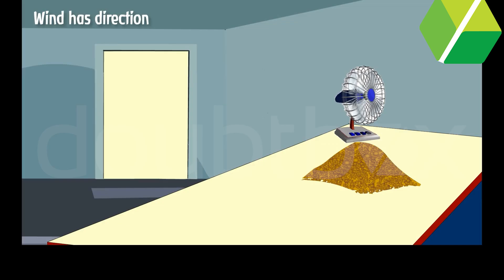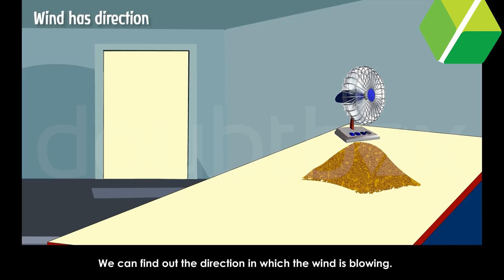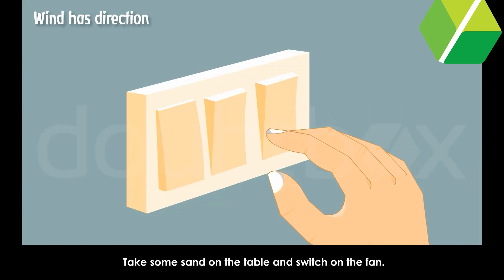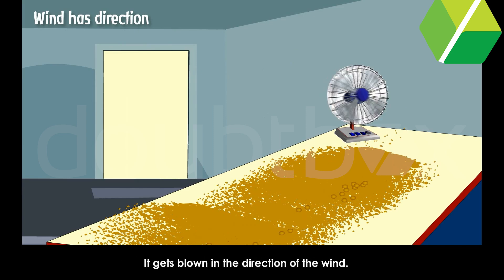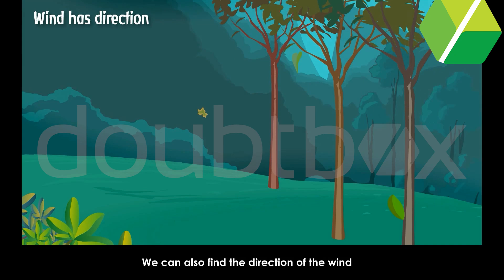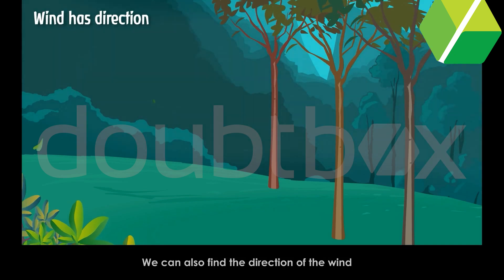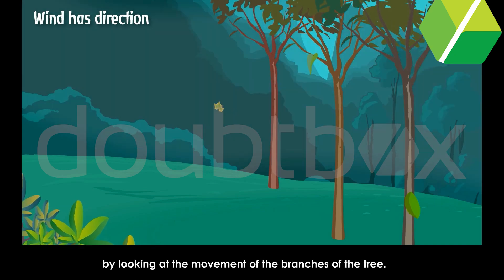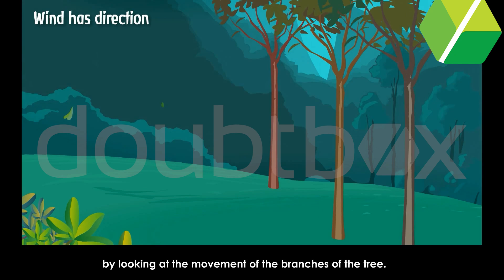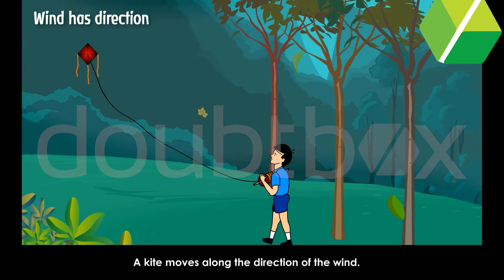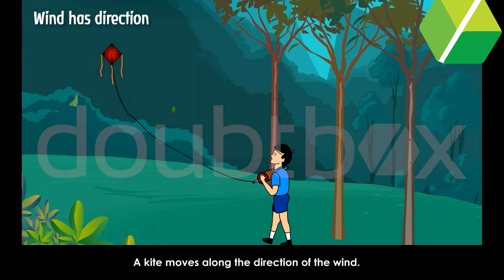Wind has direction. We can find out the direction in which the wind is blowing. Take some sand on a table and switch on the fan — it gets blown in the direction of the wind. We can also find the direction of the wind by looking at the movement of the branches of a tree. A kite moves along the direction of the wind.